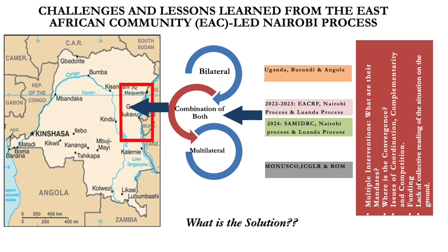The existence of these mechanisms has proved important for quick response and deployment because they have policies and structures. But the challenge is how effective are these structures? Yes, we have policies, but how do we implement them so that we can find lasting solutions — for example, in the DRC?